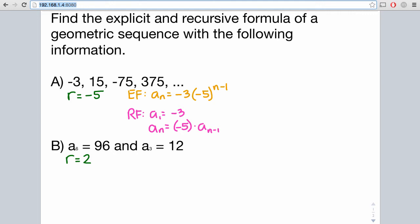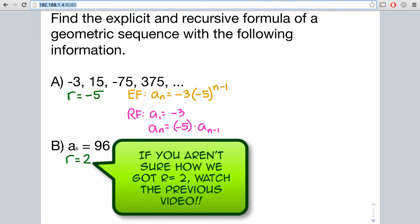Now, in part B, we were given two non-consecutive terms in your geometric sequence. We were given the third term and the sixth term. You can find out how we got two in the previous video.